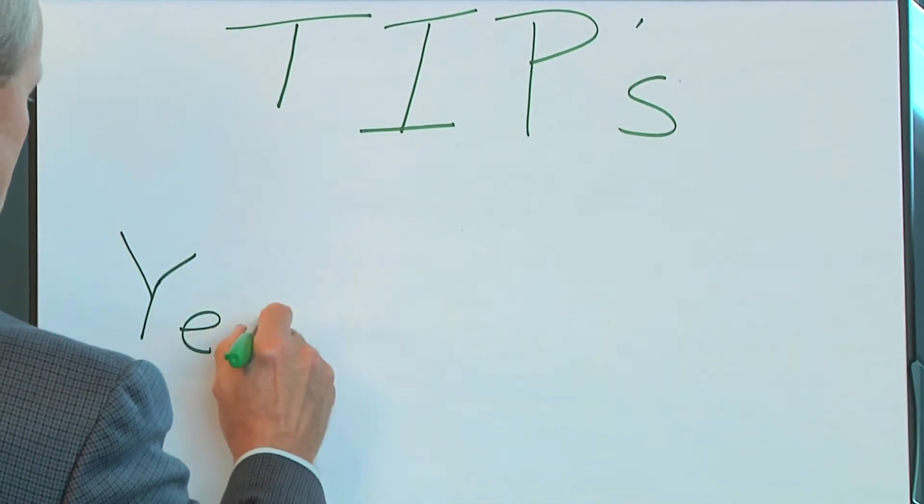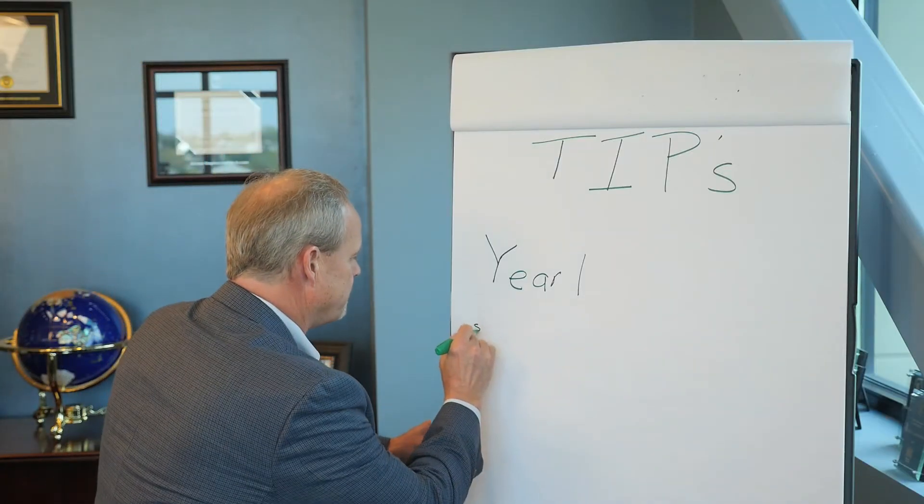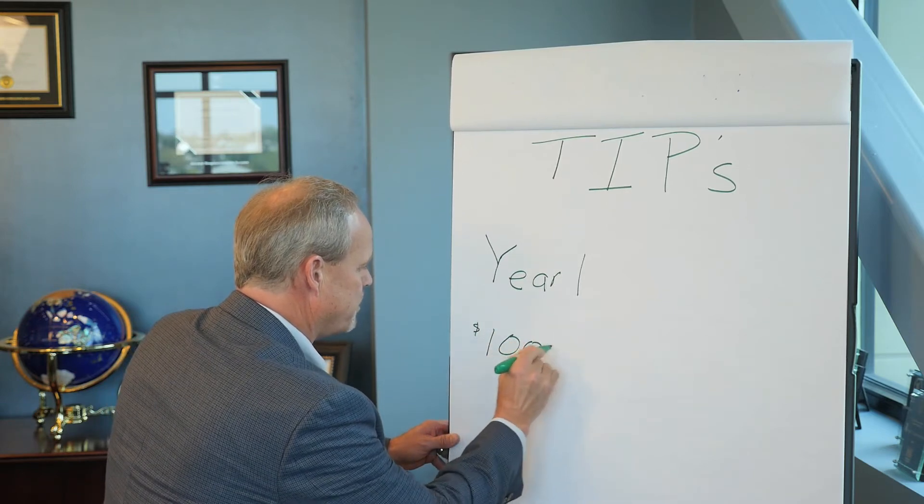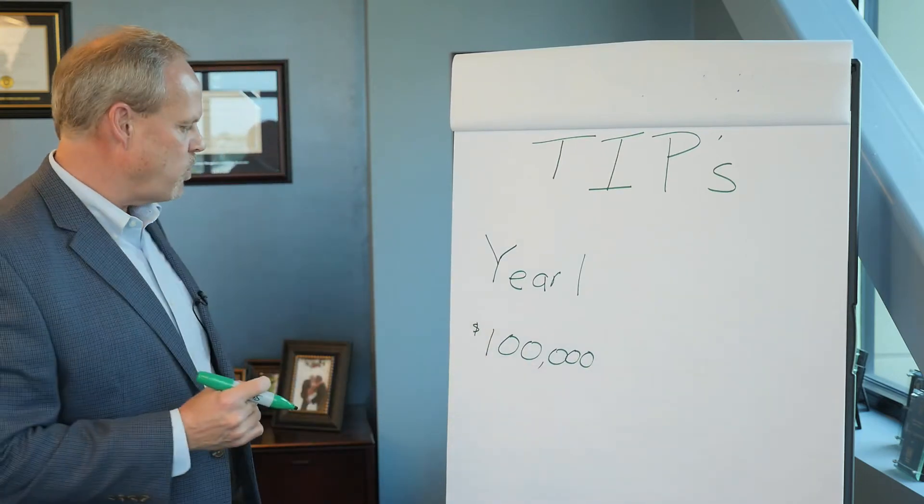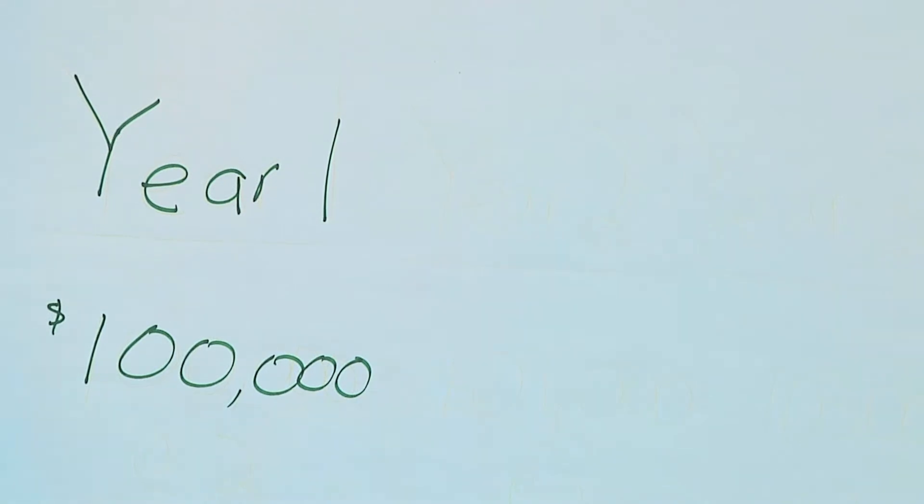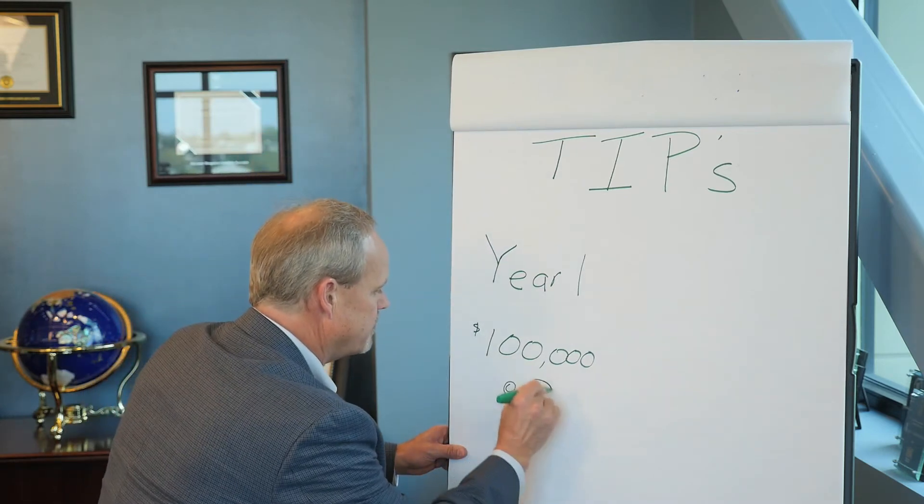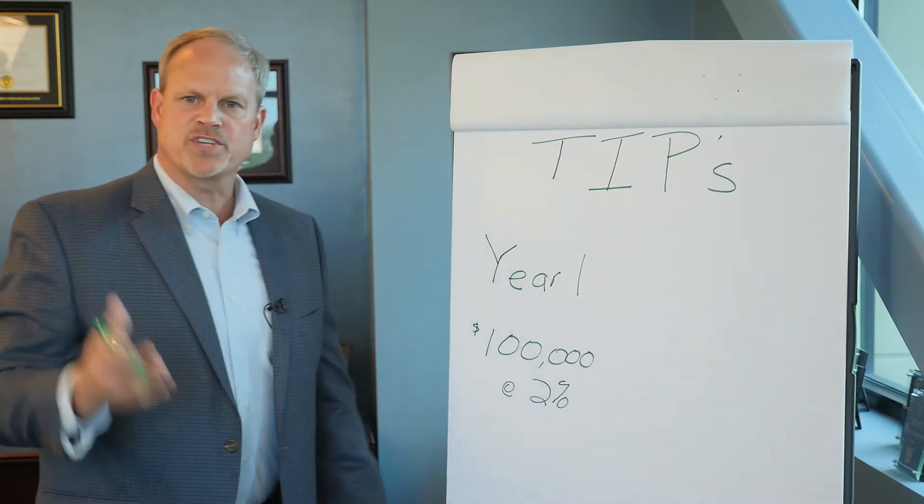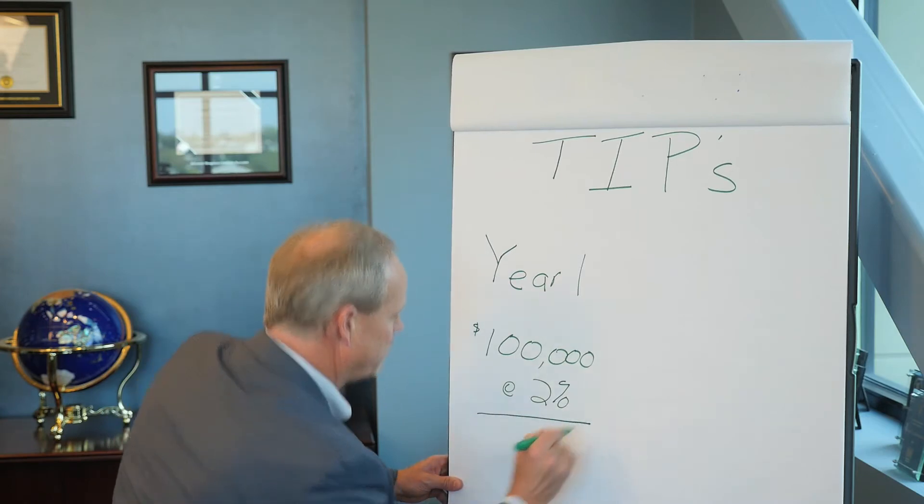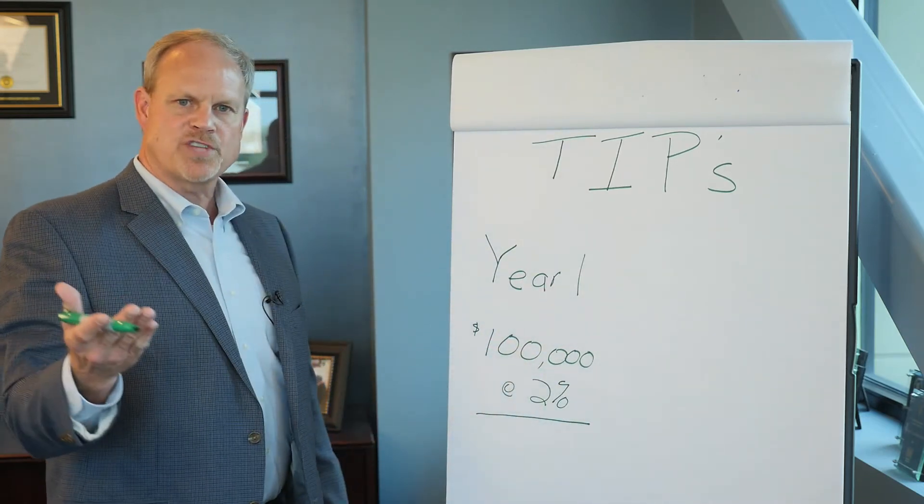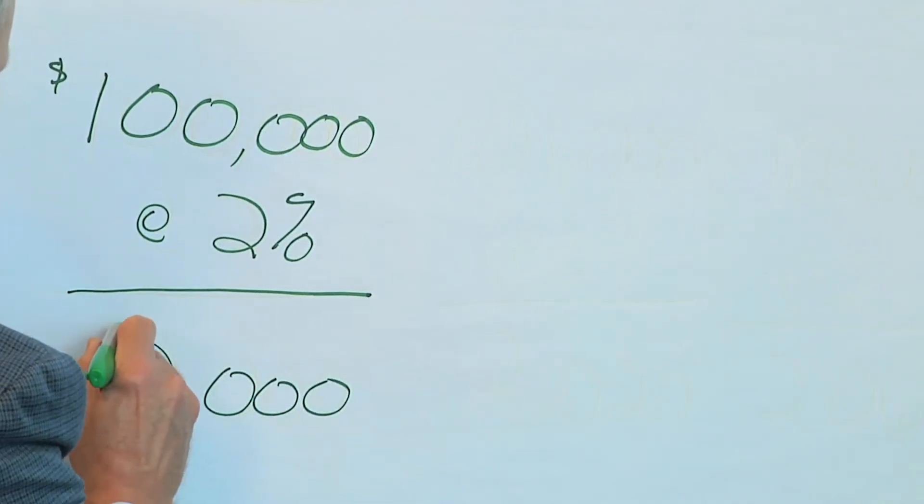If we bought in year one a hundred thousand dollars with a face value of one hundred thousand and par is at one hundred, so our total investment is one hundred thousand dollars. The coupon in this hypothetical example is at two percent. As I mentioned, the first six months we will receive a coupon and the second six months we will receive a coupon, in this case one thousand dollars each, but annualized that would be two thousand dollars.